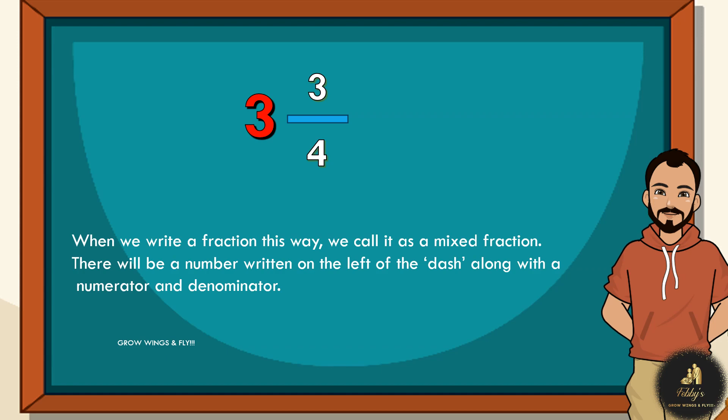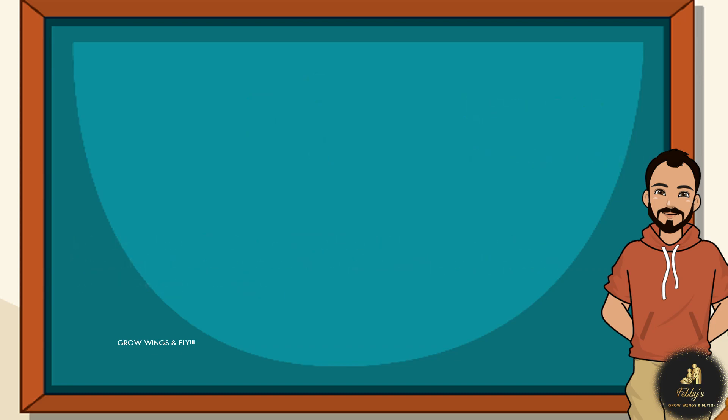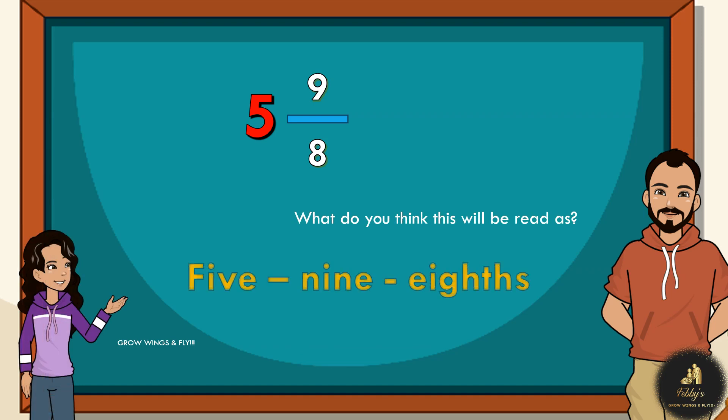How do we read the mixed fractions? We read them as three and three-fourths. So, the first three is the big three that you see on your left. Can you try doing this? Angel wanted to try it. So, Angel said, I think it is 5 9/8. Am I right? Yes. You are right. That is the number.